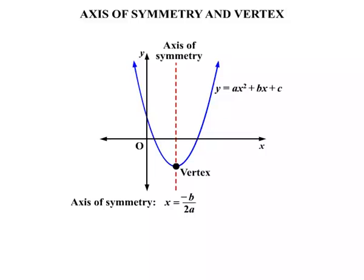Now the axis of symmetry, formula for that, x equals minus b over 2a. So you'll certainly need to remember that. And the vertex, once you've found the axis of symmetry, the vertex is found by substitution. Let's see how it all works.